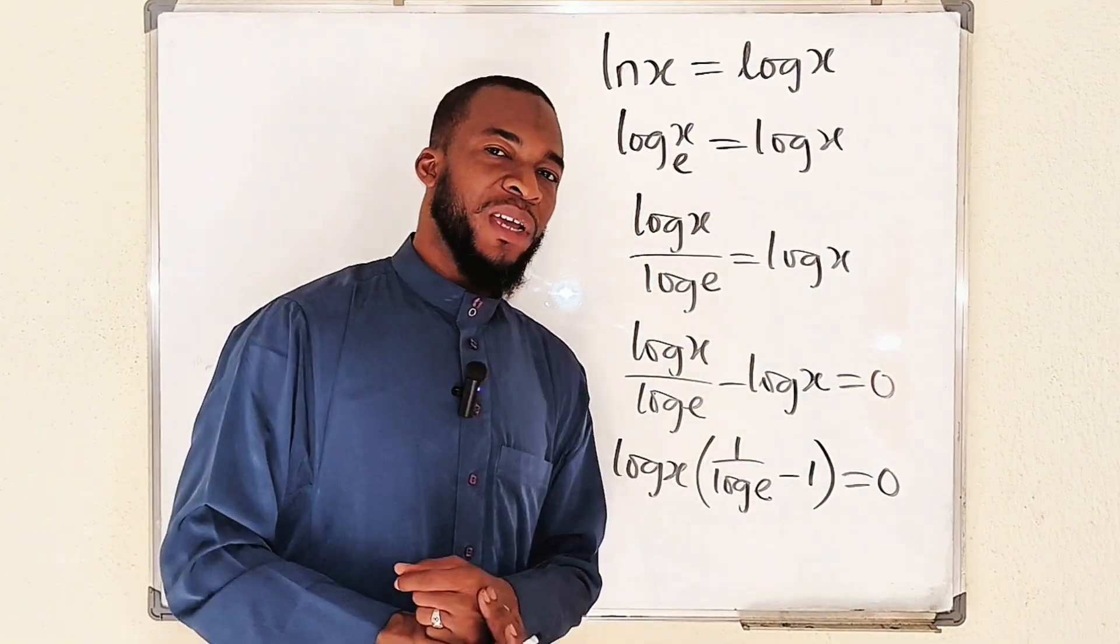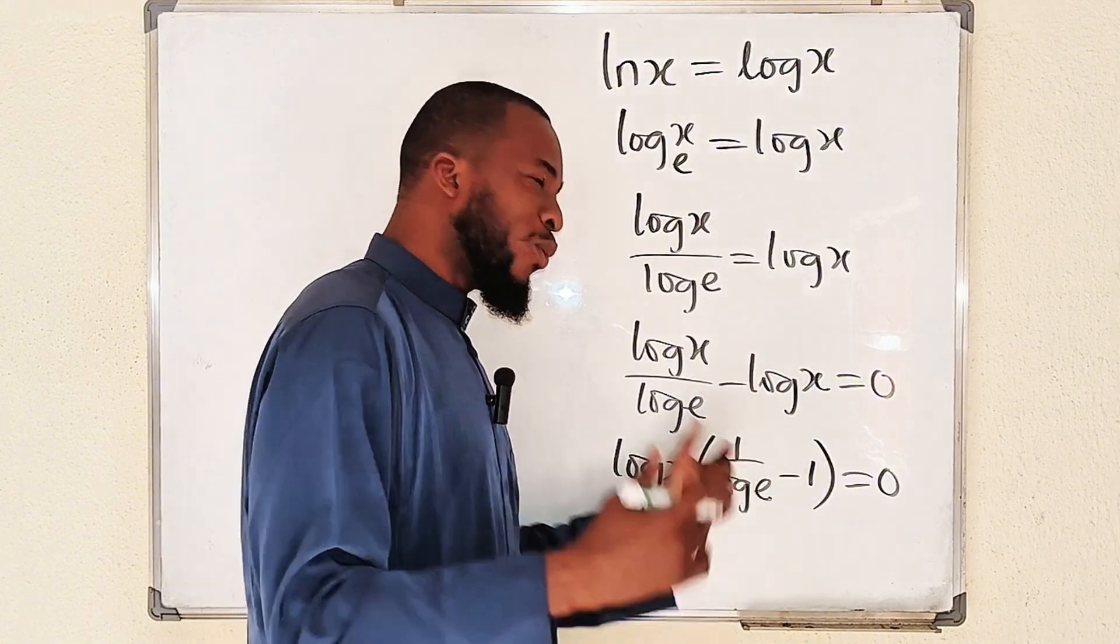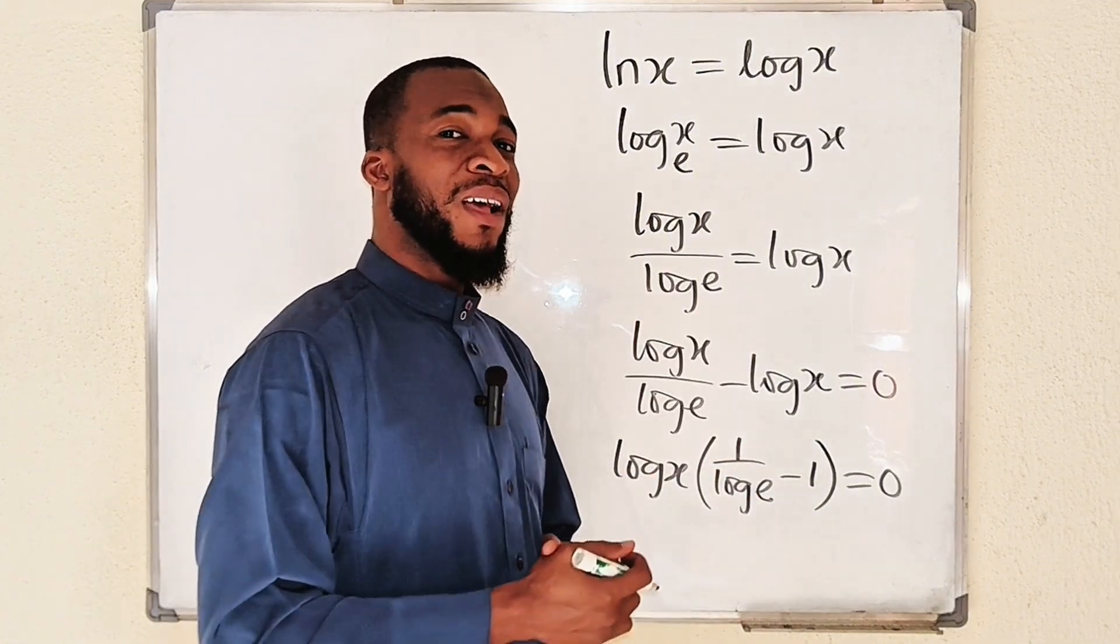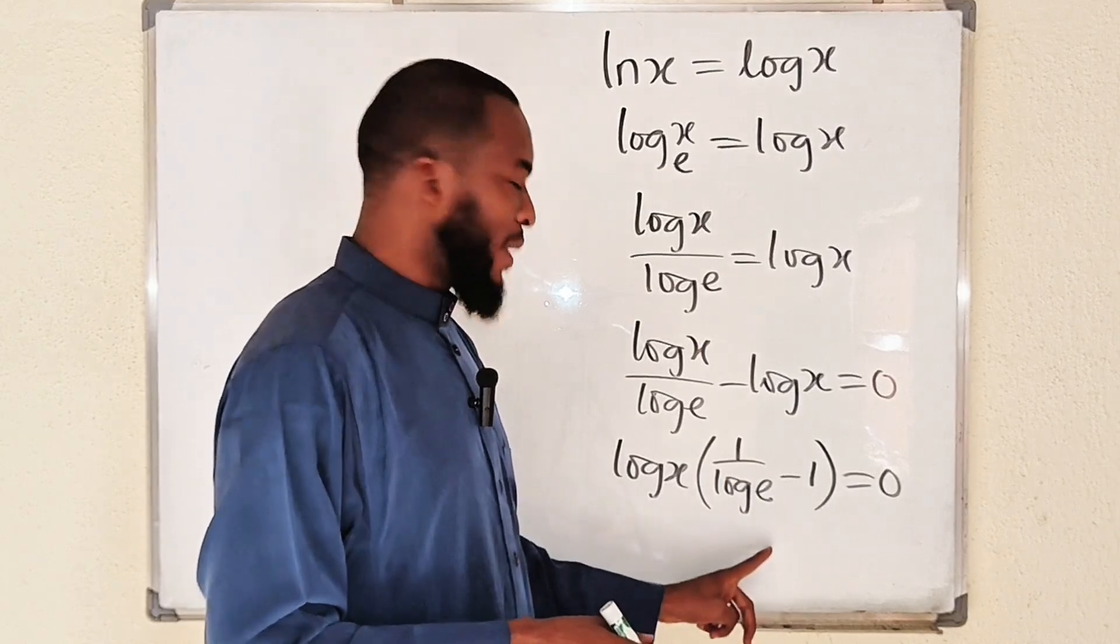So we have two things multiplying each other. It implies either this is 0 or this is 0 or all of them at once are equal to 0. But we know that this is not equal to 0, but this.